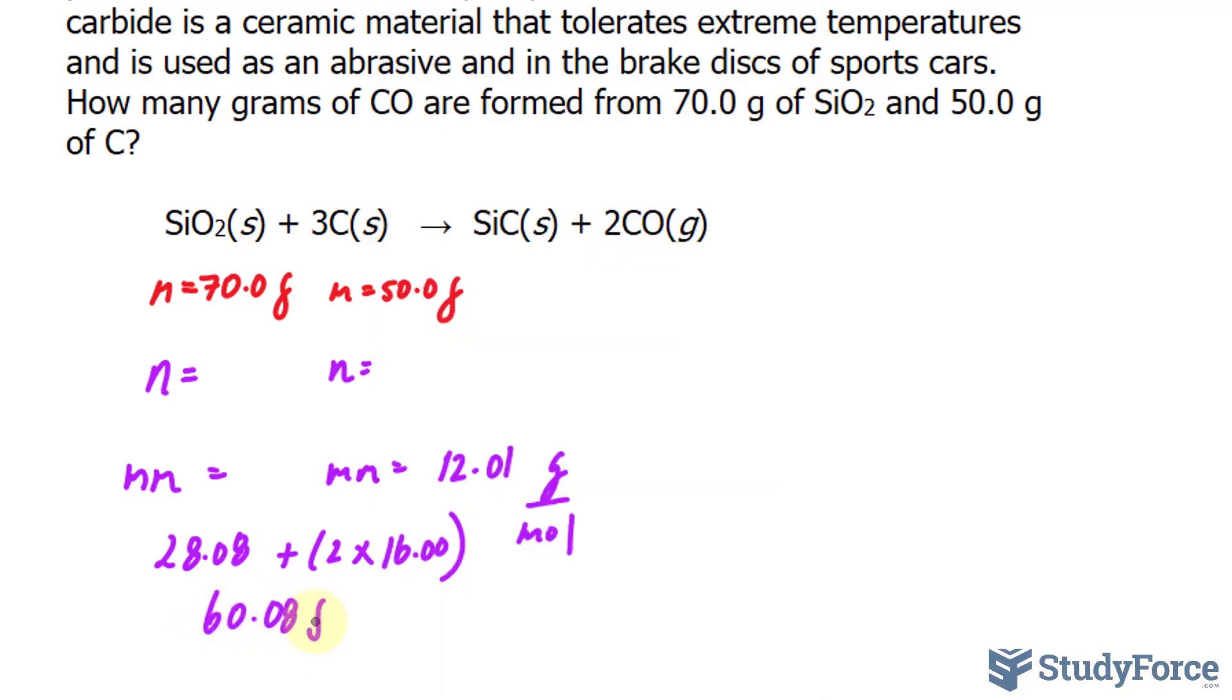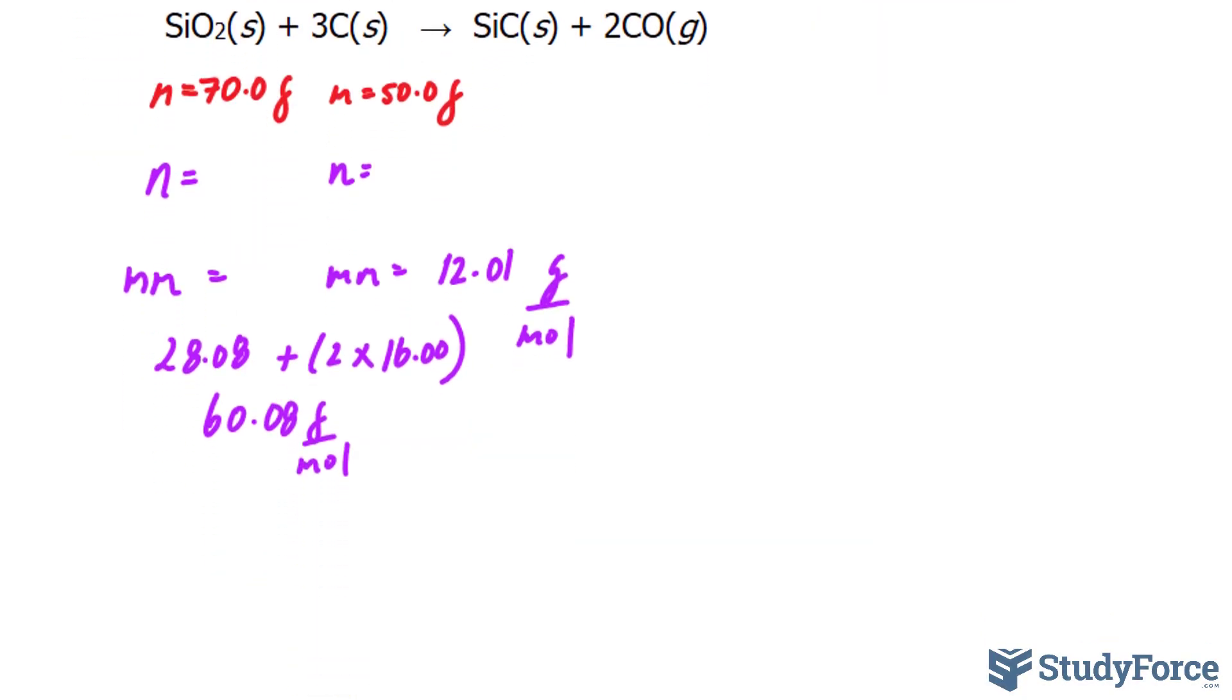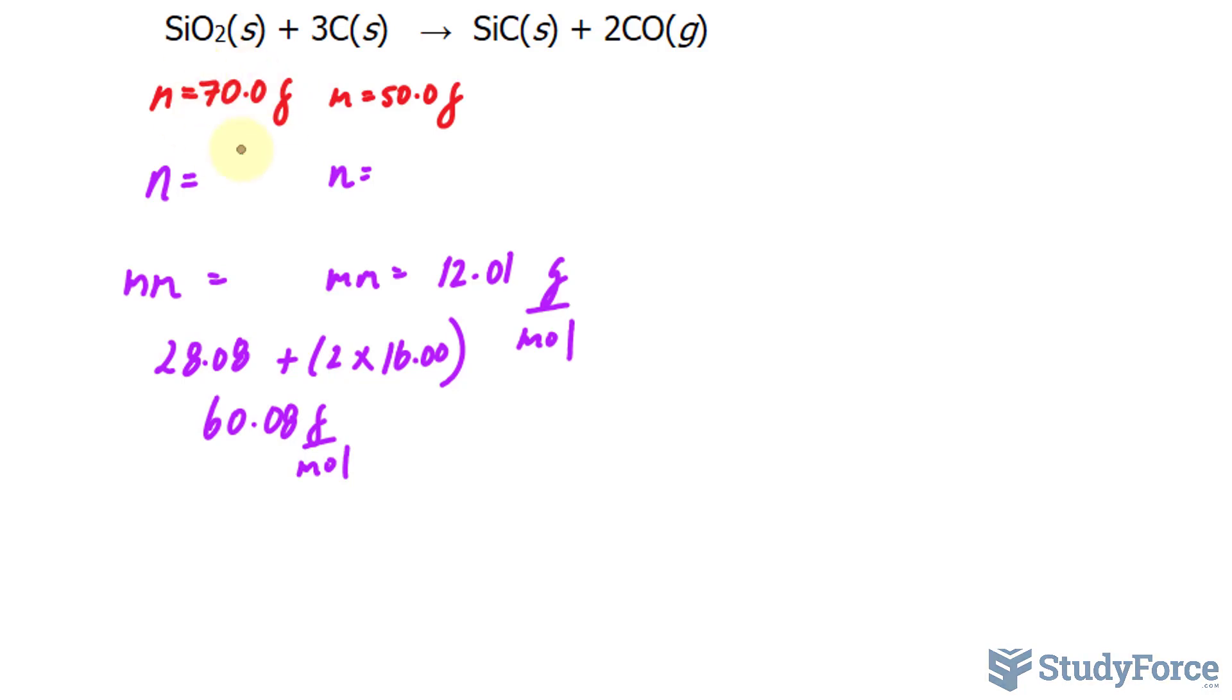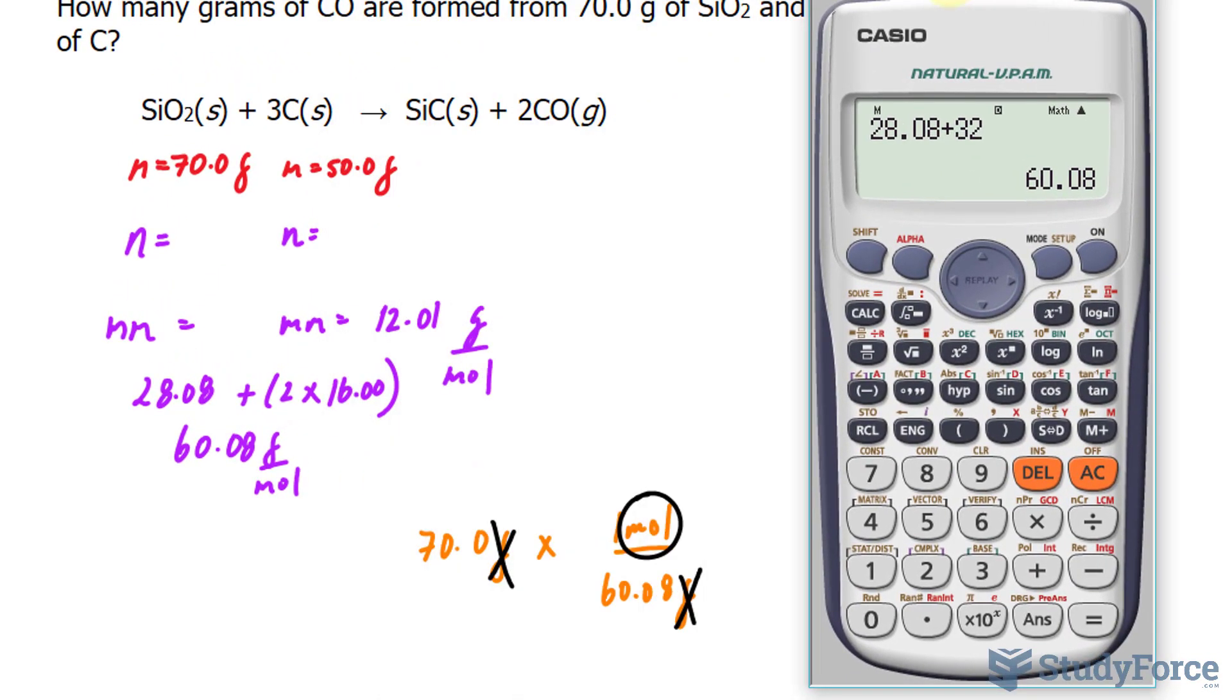The reason why we need these molar masses is because we can take the mass of silicon dioxide, for example, 70.0 grams, and multiply it to the flipped version of this ratio. So notice that we have grams at the top and moles at the bottom. I'll put one mole at the top and 60.08 grams at the bottom. You can always flip them as you wish. Now when we multiply this, the gram unit will cancel out, giving us the amount of moles for SiO2. Let's use our calculator. 70.0 times 1 divided by 60.08, and we end up with 1.1651 moles.